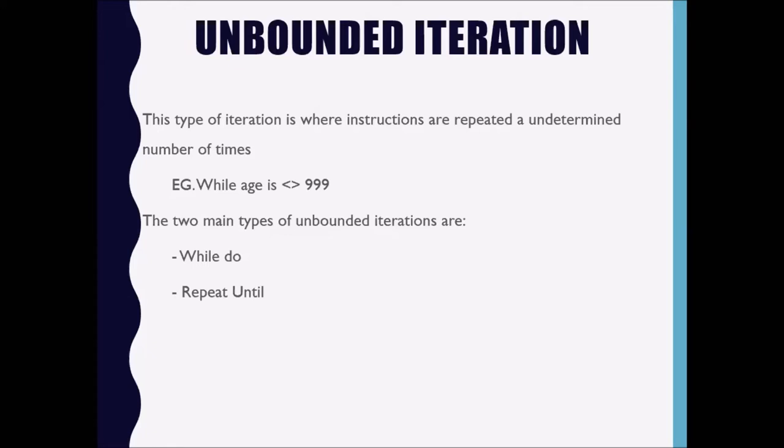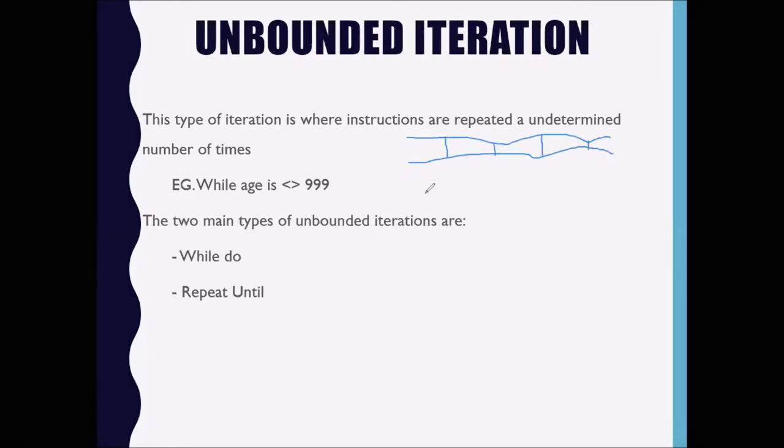That is the difference with unbounded iteration. We have two structures we use with unbounded iteration: you can use a while-do loop and you can use a repeat-until loop.